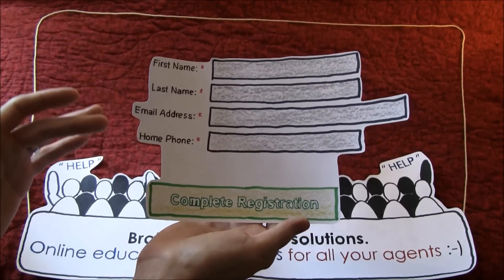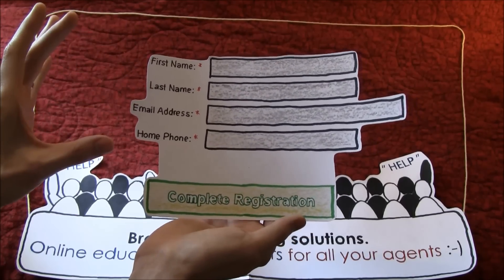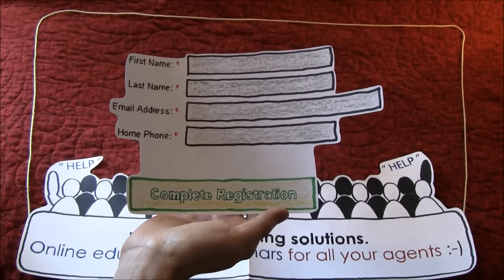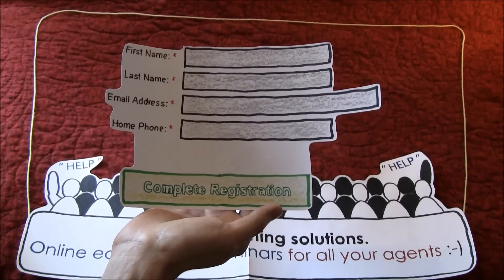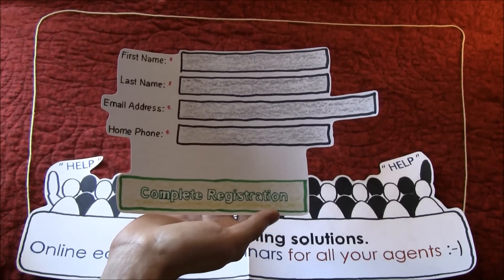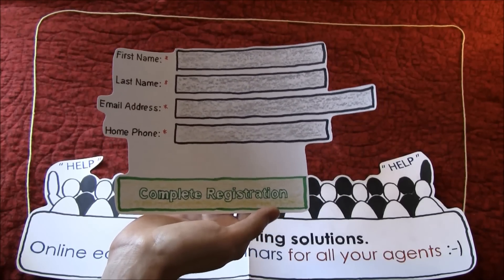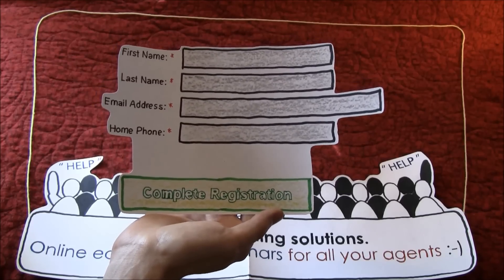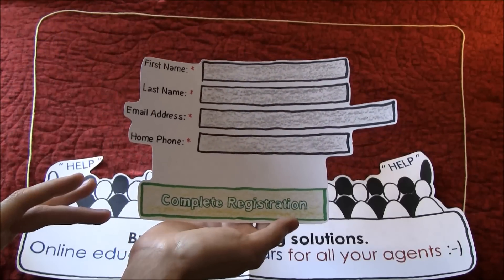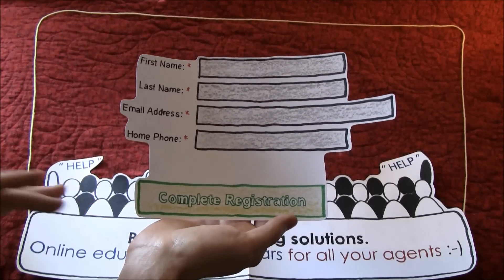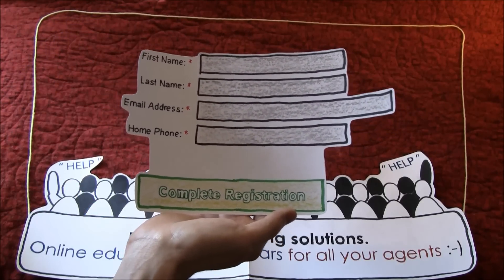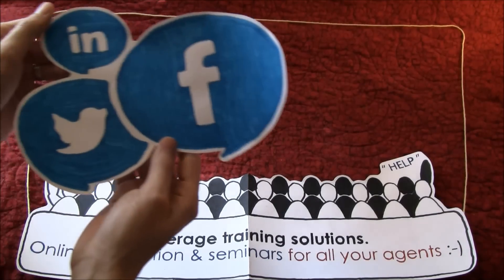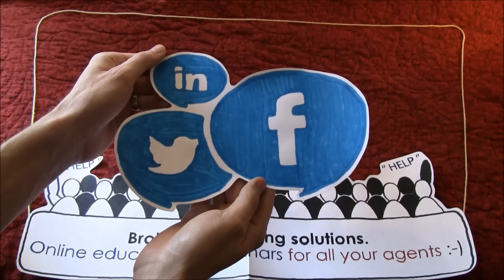What I mean by that is people will go to that page and register whether they're going or not, giving their name, phone number, and email. You can change the fields you ask for. So if you have a big team and everybody is calling their sphere, instead of each person having to put together their own list, this creates one central list that everybody can drive people to.